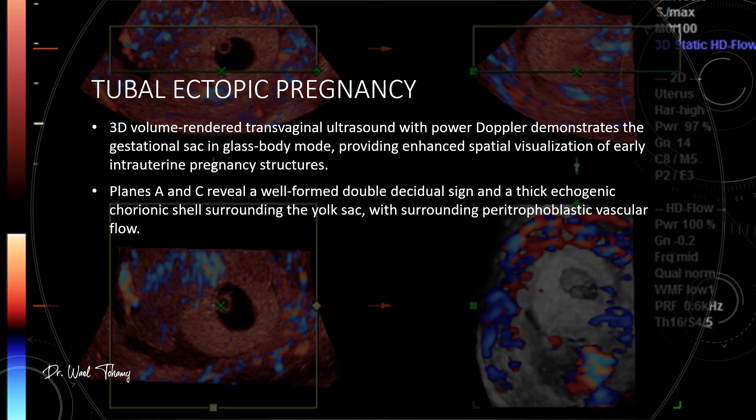Here is a 3D volume-rendered transvaginal scan using power Doppler displayed in glass body mode. This mode enhances spatial visualization and you can really appreciate the relationship of early pregnancy structures. In planes A and C, you will spot a well-defined double decidual sign and a thick echogenic chorionic shell surrounding the yolk sac with peritrophoblastic vascular flow wrapping around it. 3D glass body mode isn't just pretty imaging — it's a powerful tool for confirming structural relationships and differentiating between intrauterine and ectopic gestations.